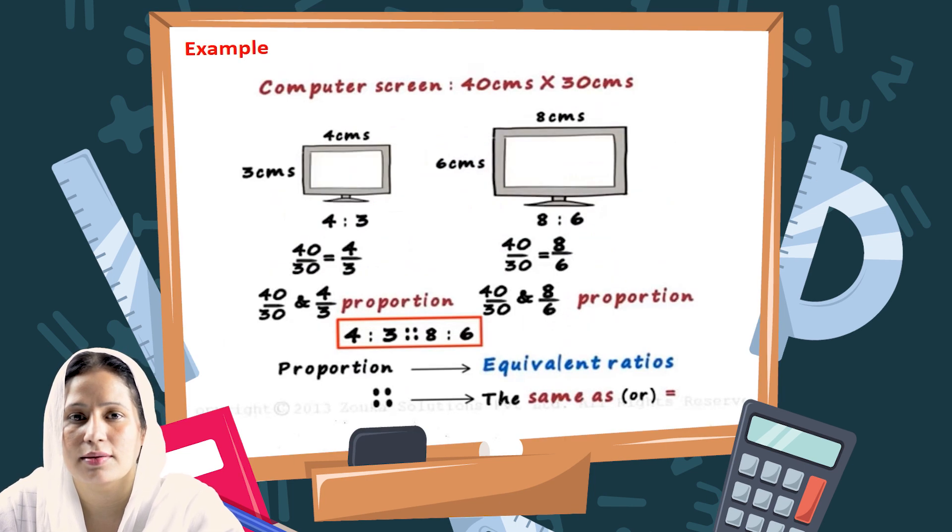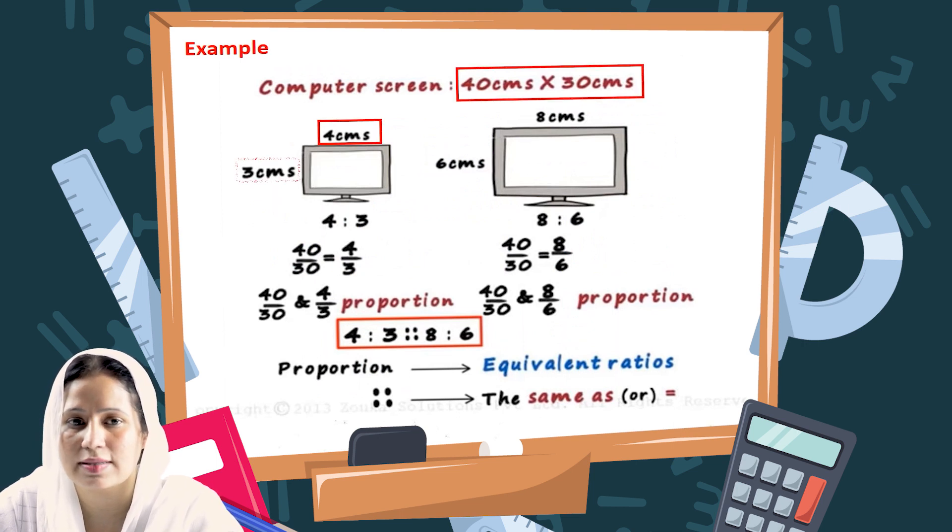The first example: there is a computer screen of 40 centimeters by 30 centimeters. You are asked to draw that screen on your copy, and you know that your notebook is too small for that. So what we do is scale down the given measurements to 4 centimeters by 3 centimeters and draw a screen of 4 by 3 on our notebook.